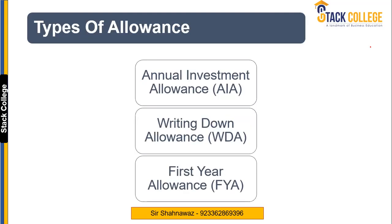There are three types of allowance which you can get. One is called the Annual Investment Allowance (AIA). The other is the Written Down Allowance (WDA). And the third one is the First Year Allowance (FYA). Every type of allowance is available on different types of assets, so we need to understand the situation where we can get AIA, WDA, as well as the First Year Allowance.